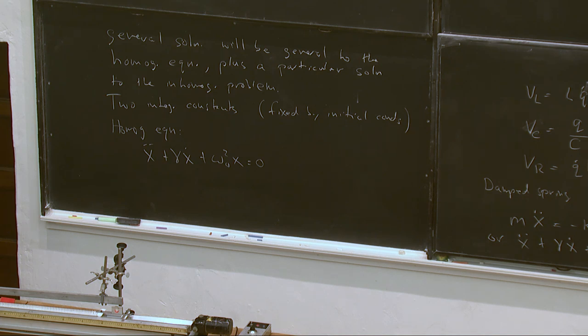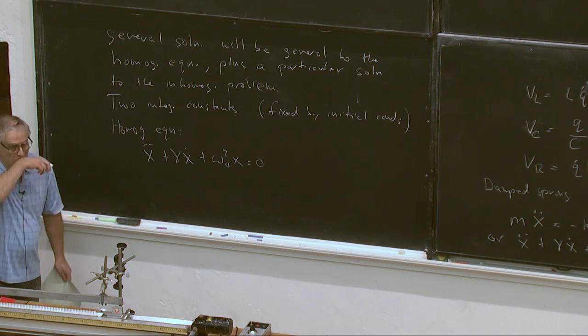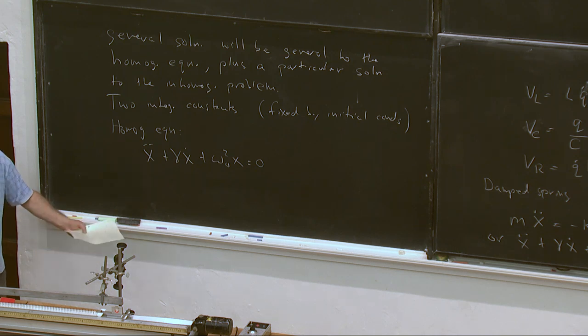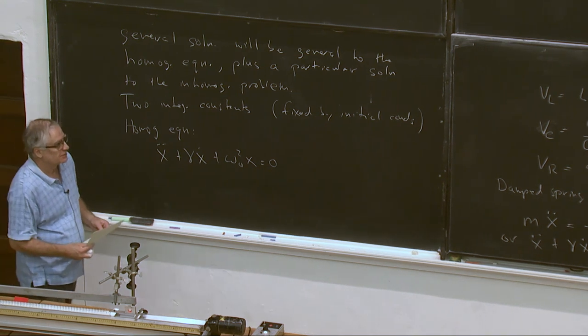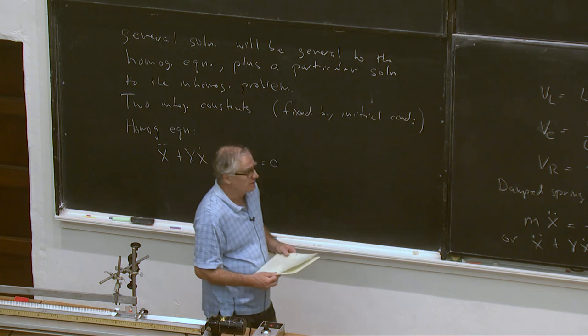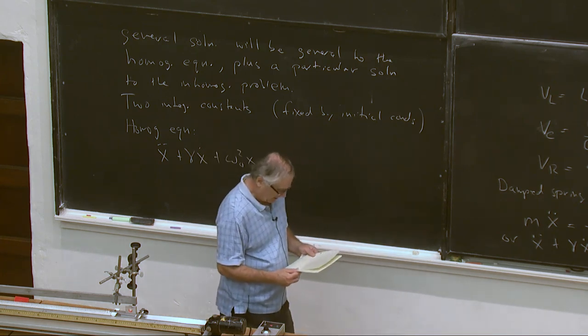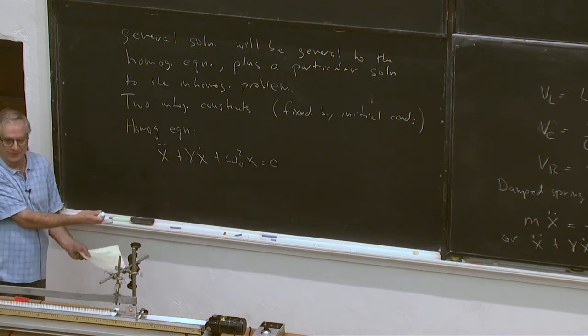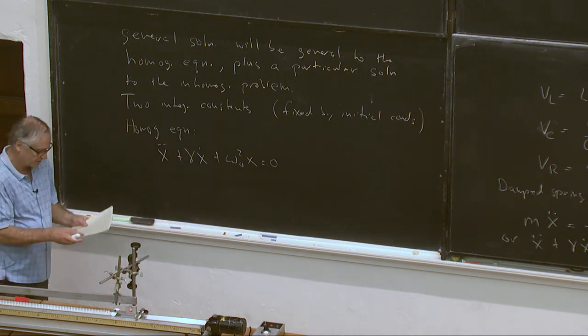X double dot plus gamma x dot plus omega naught squared x is equal to zero. What do we do? Well, we have kind of a guess for the solution. We have that as a guess. It's maybe an exponential times a sinusoid, but we can write sines and cosines as exponentials too. E to the i x is just cosine x plus i sine x. So maybe just try an exponential to this. Try an exponential solution.